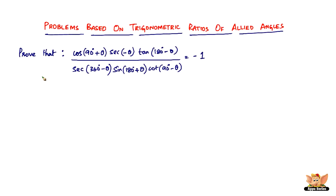Here is the question: prove that cos(90° + θ) × sec(−θ) × tan(180° − θ) divided by sec(360° − θ) × sin(180° + θ) × cot(90° − θ) equals negative one. We just have to evaluate each term.